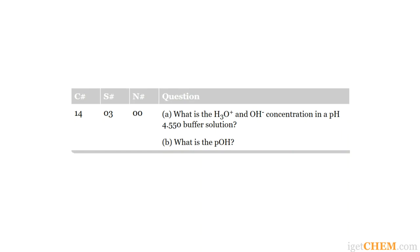Welcome to another video on the iGetChem channel where we help you learn chemistry easily by showing you how to do problems. This problem that we are looking at today is on pH and pOH calculation. Part A: what is the H3O+ and OH- concentration in a pH 4.550 buffer solution, and Part B: what is the pOH.